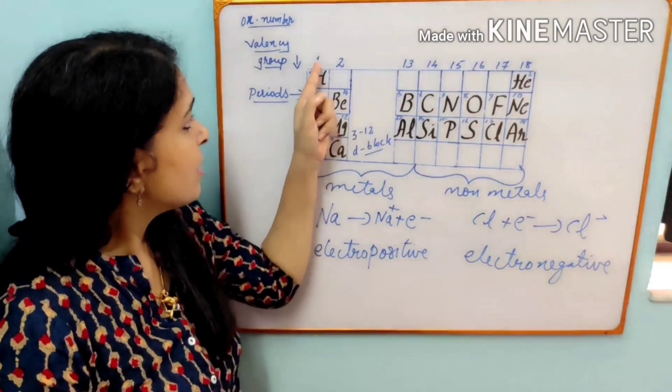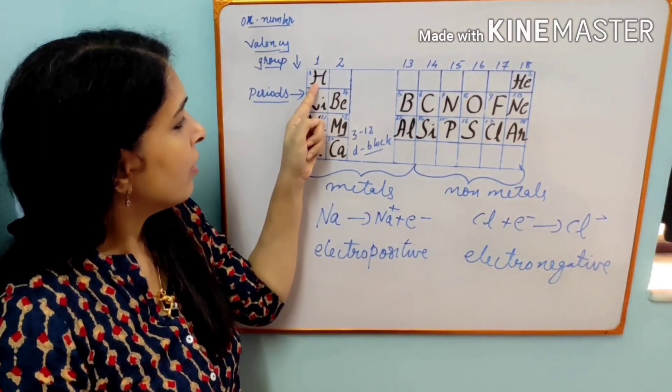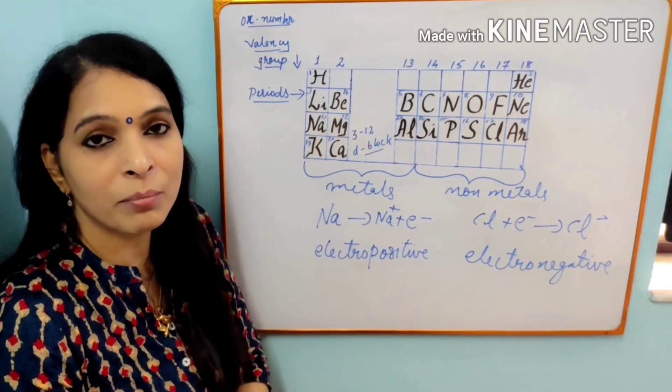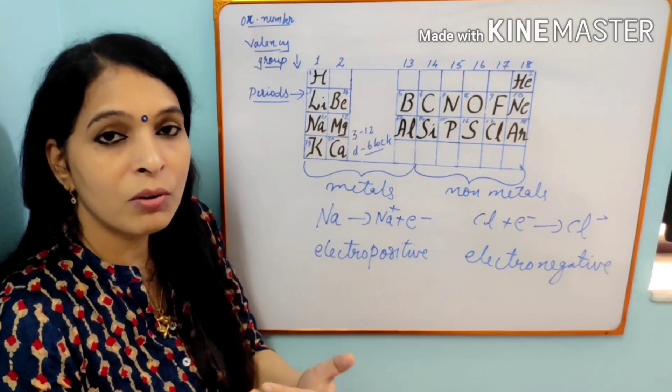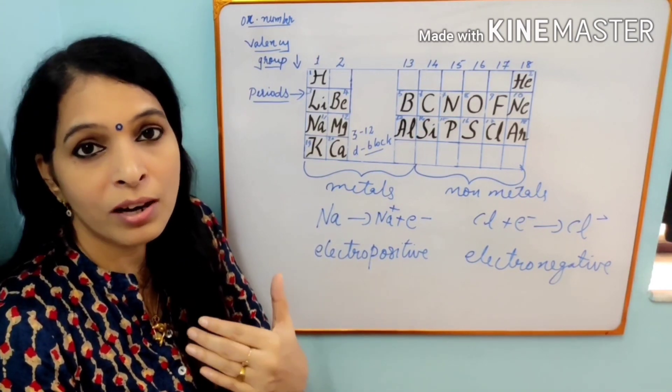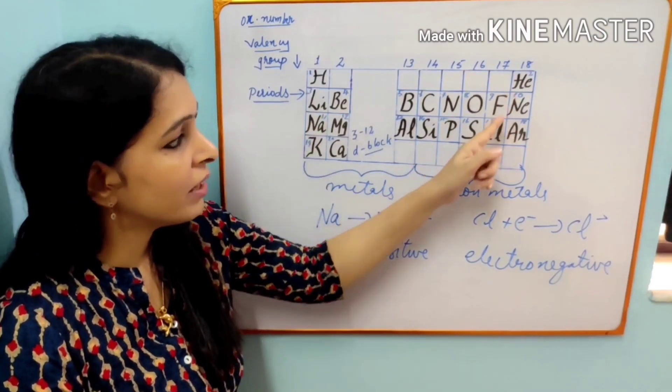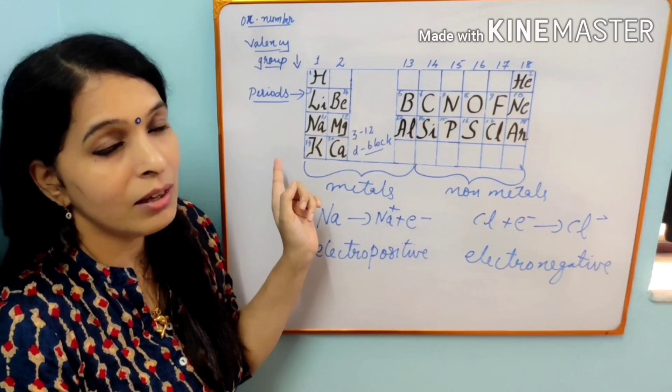Now, this number. See, hydrogen number 1. It is not just a number. It is their atomic number. And what is atomic number? What is the structure of an atom and all? I will take in the next class. Now, I am explaining what all you will get from this table.